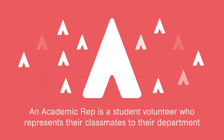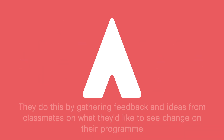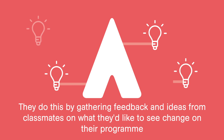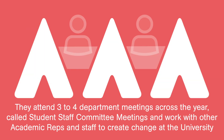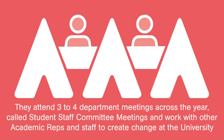An academic rep is a student volunteer who represents their classmates to their department. They do this by gathering feedback and ideas from classmates on what they'd like to see change in their programme. They attend three to four department meetings across the year called Student Staff Committee Meetings and work with other academic reps and staff to create change at the university.